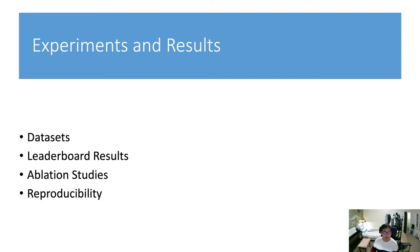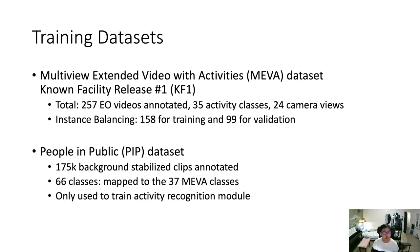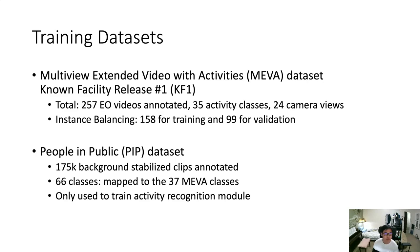Now let's look at experiments and results. For the ActiveEva series, we train mainly on the Mewa dataset with the KF1 release. There are 257 RGB videos annotated with 35 activity classes covered in 24 camera views. To balance instances, we split them into 158 for training and 99 for validation. In some experiments we also use the People in Public dataset recently released to augment data, which has 175,000 background-stabilized clips annotated in 66 classes mappable back to 37 Mewa classes. It is only used to train the activity recognition module.